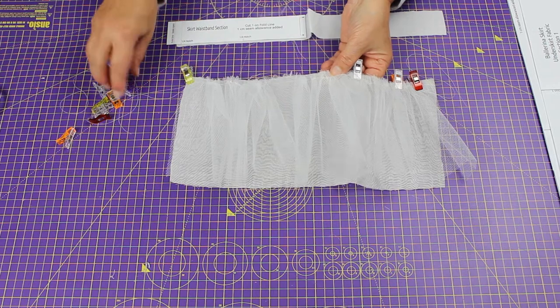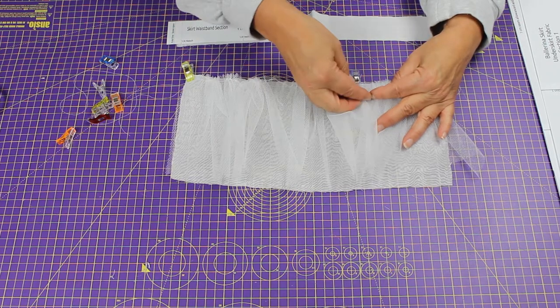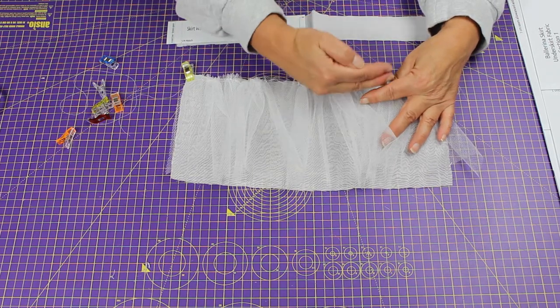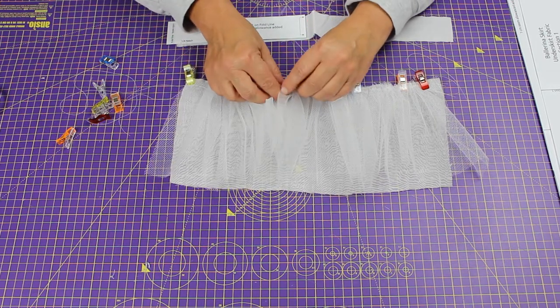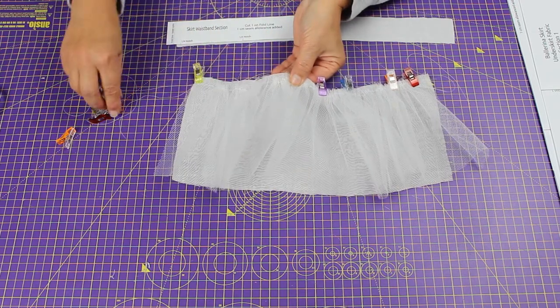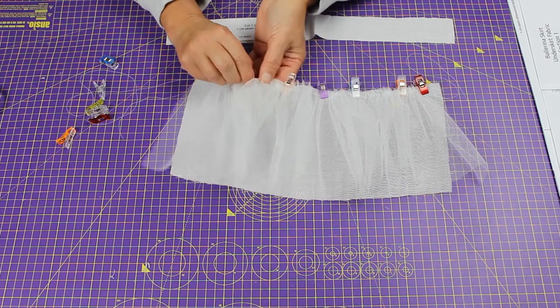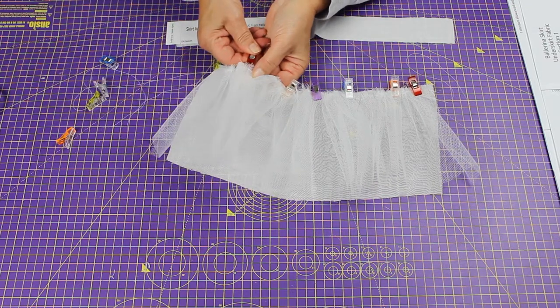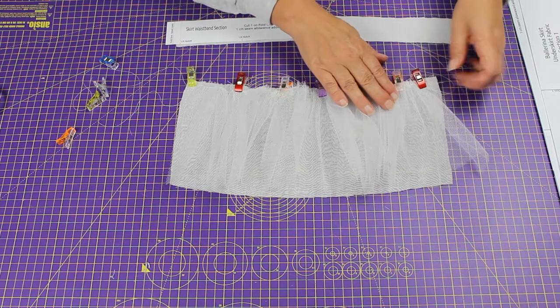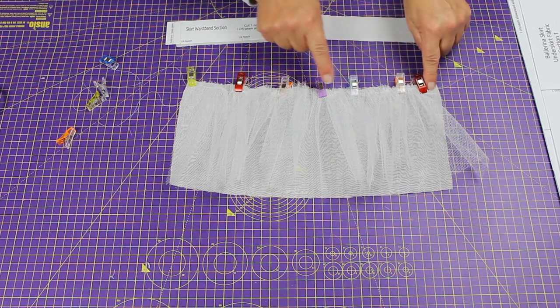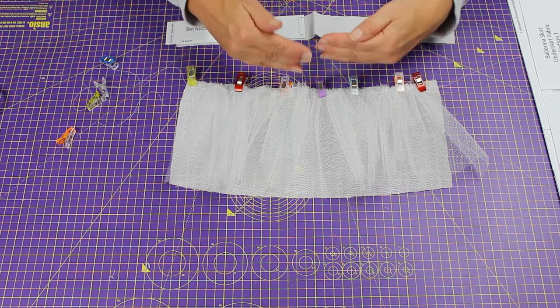Clip it all the way along. It looks a little bit fiddly now, but it's actually easier when you get it to the machine because you can compress it and push the edges together and stitch. Just make the gathers as even as you can.